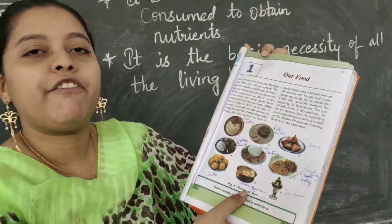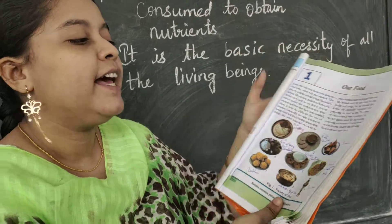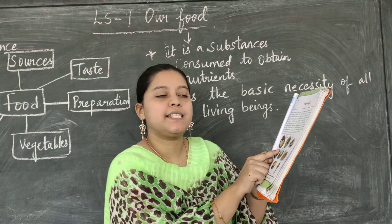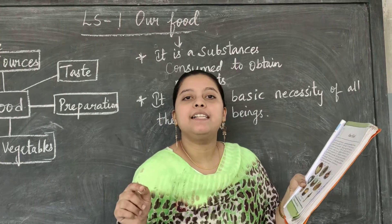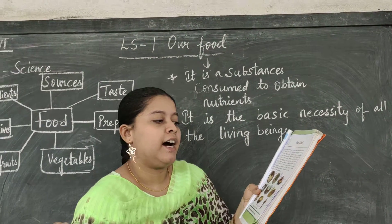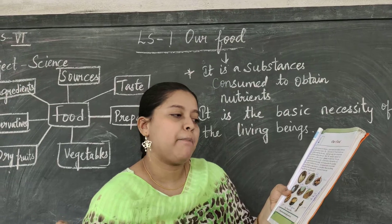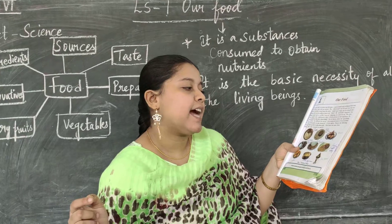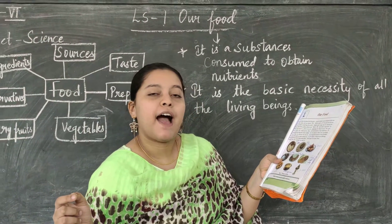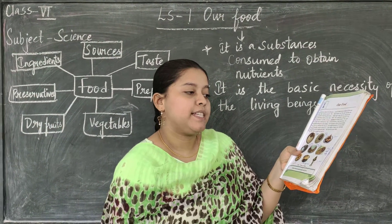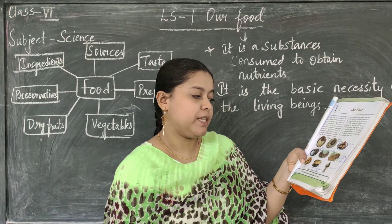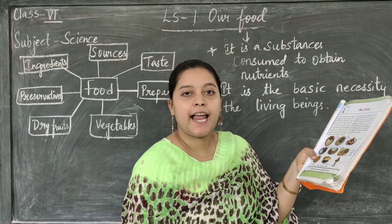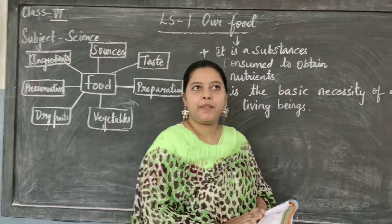Now open your textbook to page number one and see Figure Number One — Variety of Foods. In picture one: dosa and chutney. Picture two: idli and sambar. Picture three: samosa. Picture four: rice, curry, and sambar. Picture five: vada and chutney. Picture six: chapati and curry. Picture seven: laddus. Picture eight: payasam. Picture nine: ice cream.